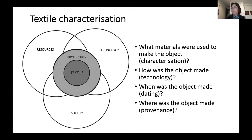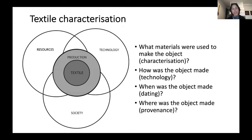So how do we go about that? Well, any textile is usually a combination of a culture's technological knowledge, access to resources, different kinds of fibers, different kinds of dyes, and of course the social ideas, aesthetics, and those kinds of aspects that go into the production of any textile.